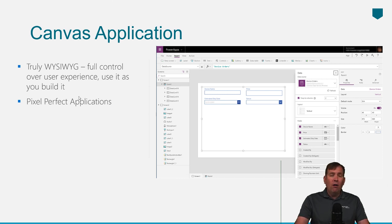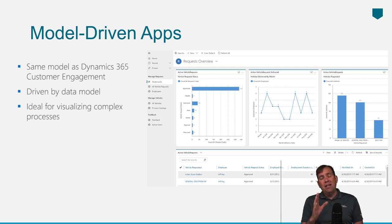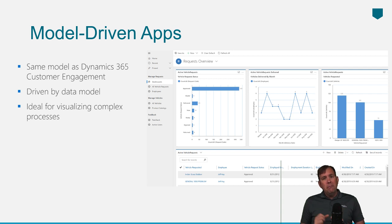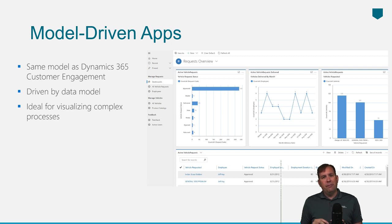Model-driven applications are different — we start with data first, and that data lives in a very specific place. The data is going to live in a Common Data Services platform, which is essentially the same database that Dynamics 365 uses. It uses the Dynamics 365 customer engagement model by default. We start with the data model and then build out from there, and it's ideal for visualizing really complex business processes.